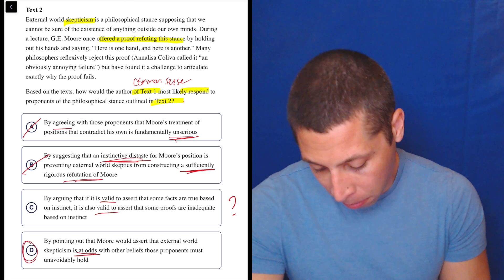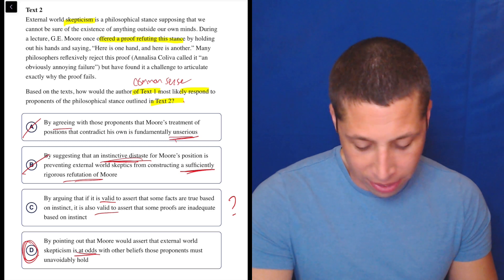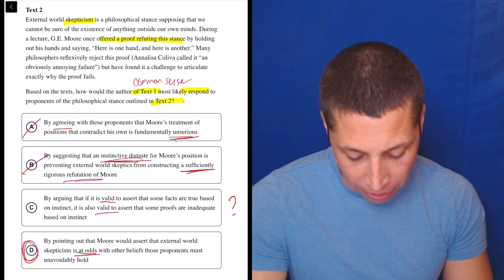If we were going with disagreeing, then that would be a good one to kind of match with that. And it is valid to assert that some facts are true based on instinct. It is also valid to assert that some proofs are inadequate based on instinct. Gosh, okay. I mean, at this point, I would probably just pick D because it just sounds like the right thing, right? They're at odds with those beliefs.